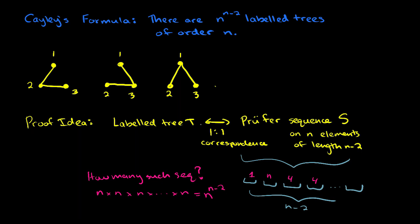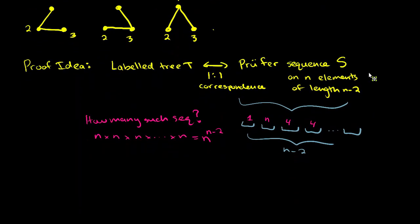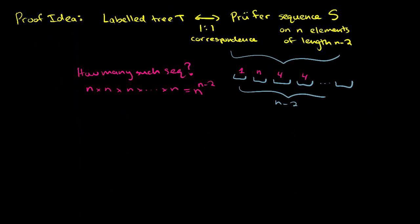So if we can show that there's a 1 to 1 correspondence between a labeled tree and a Prüfer sequence of this type, so it has length n minus 2, and it uses n elements, then we'll basically have the idea for how this is proved. So first what I'm going to do is describe a general way to go from a tree to a Prüfer sequence. So I'm going to do this part. I want to go from a tree T to a Prüfer sequence. And I'm going to describe how to do it with an example.